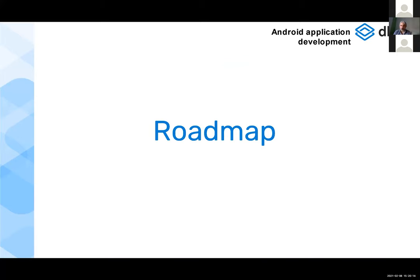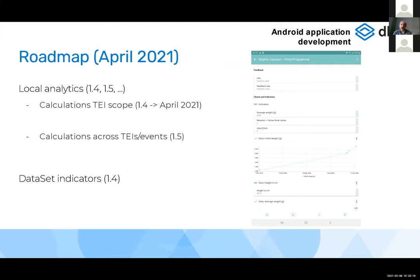Local analytics are coming in version 1.4 in April 2021. The SDK will store configuration from the Android Settings web app and perform local analytics calculations. Examples already in testing show program indicators with values, charts, and line charts. The SDK calculates the values and stores how to render different items — for example, as a line chart — and knows how to plot the data points.